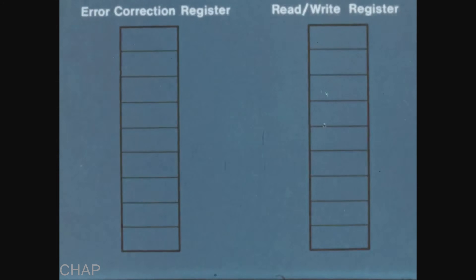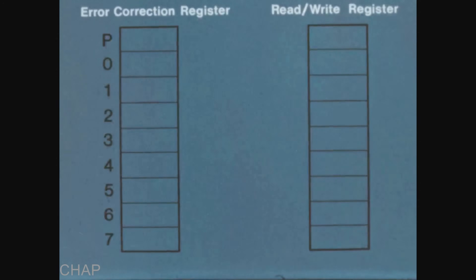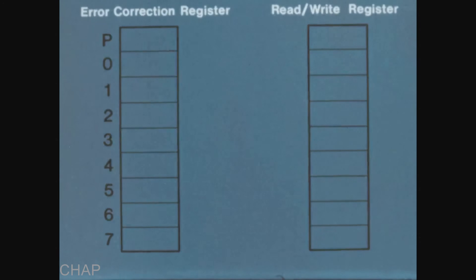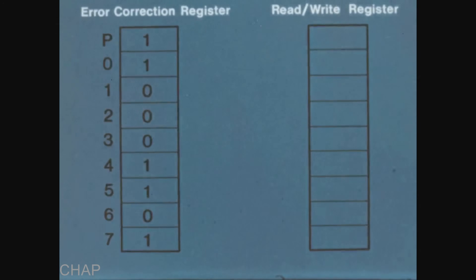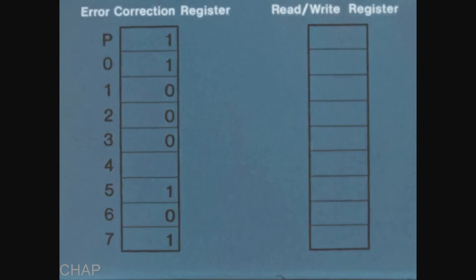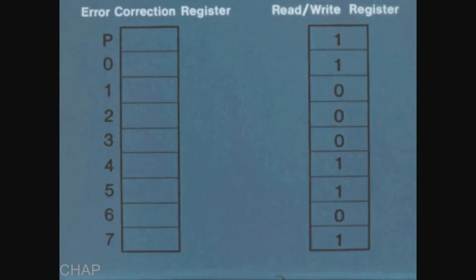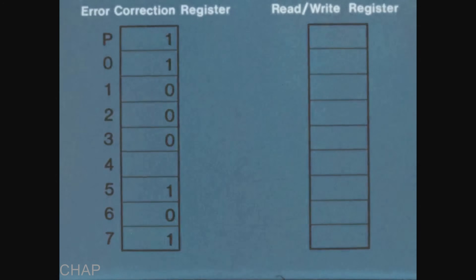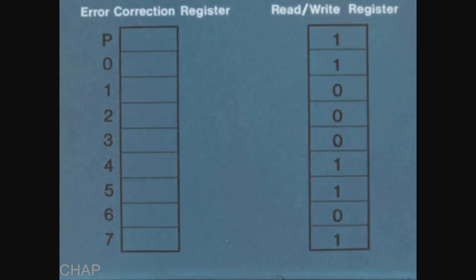In phase encoding, data are recorded in eight tracks, numbered zero through seven. A parity bit is recorded in the ninth. As each byte is accumulated, its parity is checked by an error correction register. An odd number of ones must be present if the character is to be read correctly. Should signal loss cause a parity error in one track — for example, track four — the system automatically inserts information in the track and maintains parity for the remainder of the data block.